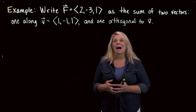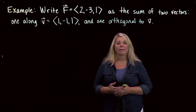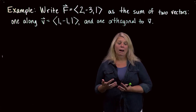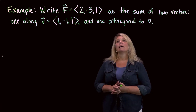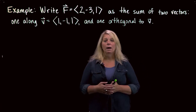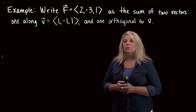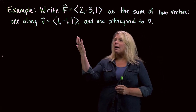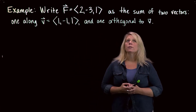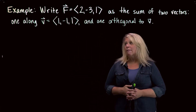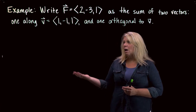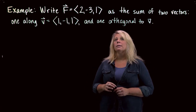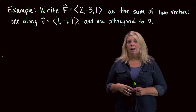In this video we're going to look at an application of some of the work we've already done with vectors. I've used some letters here to emphasize a physics application you might often do with this kind of problem, but don't get too hung up on the letters. The idea is that we want to write a vector F — for force — as the sum of two other vectors: one along vector V (a velocity vector indicating direction of motion) and another orthogonal to that velocity vector.